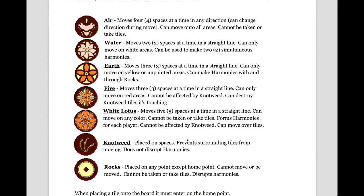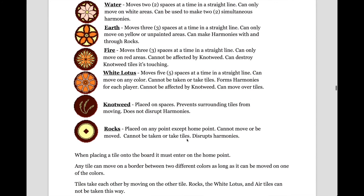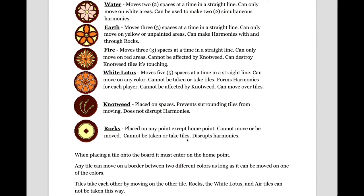The rocks can be placed on any point except the home point, and cannot move or be moved, cannot be taken or take tiles, and their main purpose is to disrupt harmonies. So, if placed next to a water tile that is in harmony with an earth tile, and it is now blocking that path, the harmony no longer exists, except for the case that if one of the tiles it is blocking is an earth tile, it counts as a harmony or can be moved through it.